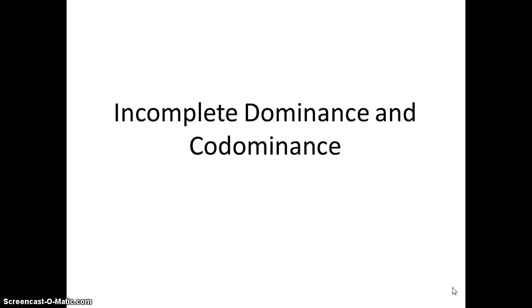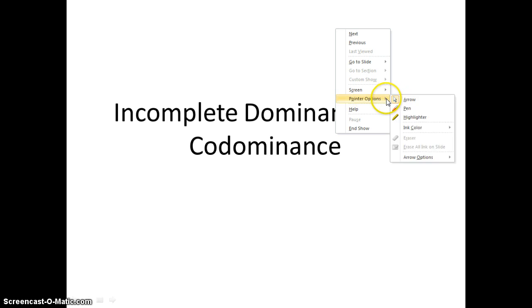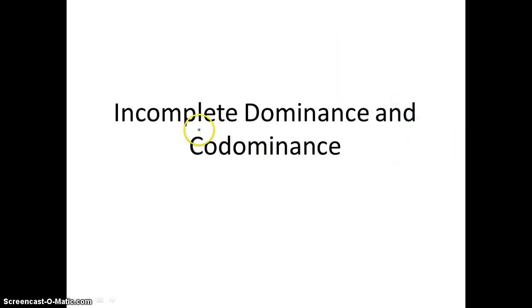So we learned in Mendel, Mendel has a law of dominance, which states that the dominant allele masks the recessive allele. There are some traits that are exceptions, or inherited differently, and where there actually is no dominant allele. And when that's the case, when no allele is dominant, the inheritance is either called incomplete dominance or co-dominance. And so we're going to learn the difference between the two.